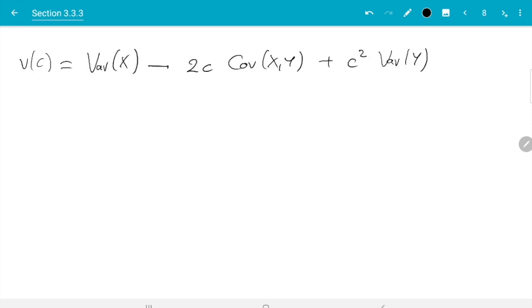So what do we get? The derivative is first term goes away, next term minus 2 covariance x and y is minus 2 covariance x y and c squared the derivative is 2c variance y. And now we need to set this equal to zero to find the minimum or maximum.